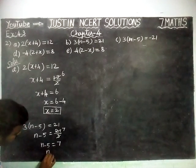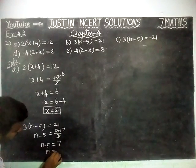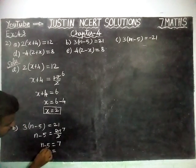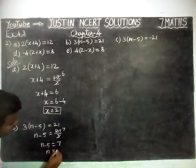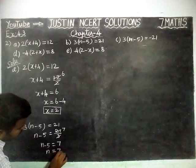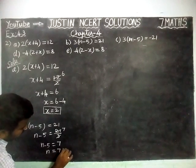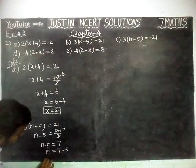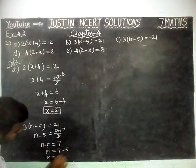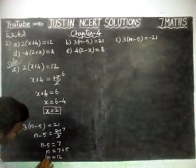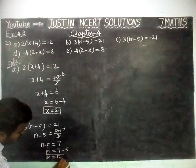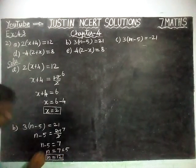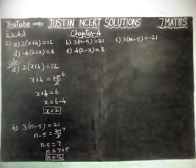Now, n is equal to — minus 5 is going to the right hand side as plus 5. So 7 plus 5: n is equal to 7 plus 5, which is equal to 12. So the value of n is equal to 12.